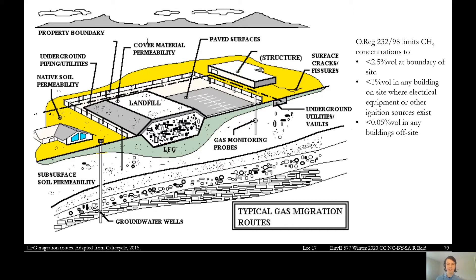On the far right of the picture, you can see gas spreading out to another building, with a surface crack or fissure highlighted. If there are defects in building foundations close to a landfill, those are a way for the gas to make its way up into a structure. Ontario Regulation 232/98 puts a limit of less than 1% by volume in any on-site building with electrical equipment, and less than 0.05% in any buildings off-site. So less than 2.5% at the property line edge, and less than 0.05% inside off-site buildings.